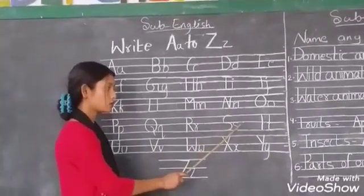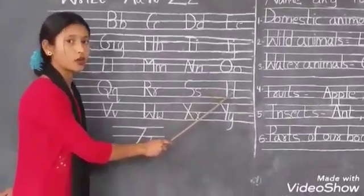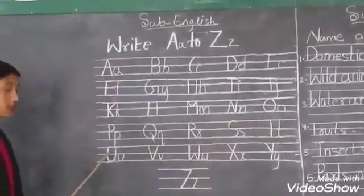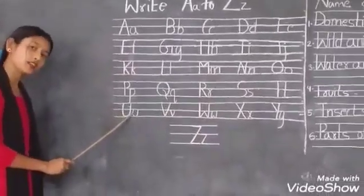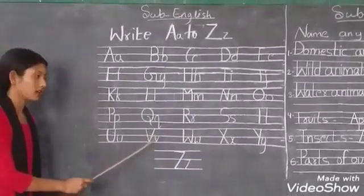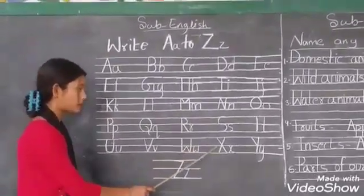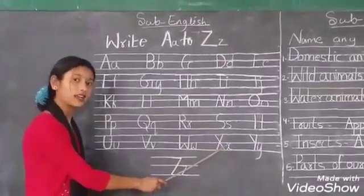Capital S, small s. Capital T, small t. Capital U, small u. Capital V, small v. Capital W, small w. Capital X, small x.